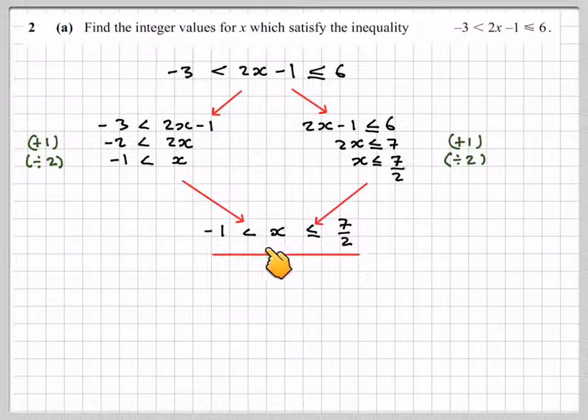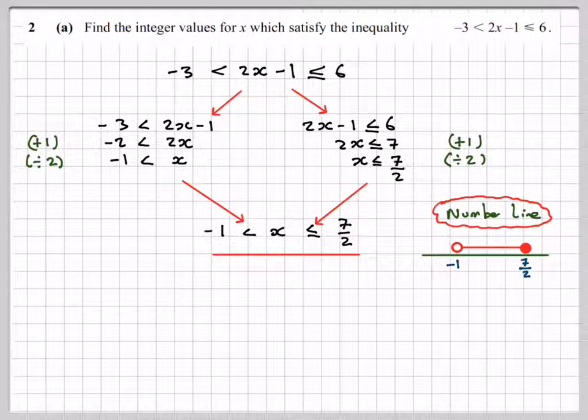And to see whether you should join them or not, it's a good idea to look at the number lines. We've got -1 and 7/2. We'll put circles. Open circle means not equal to. Closed circle means equal to as well. And this is in between, so this is the number line version.